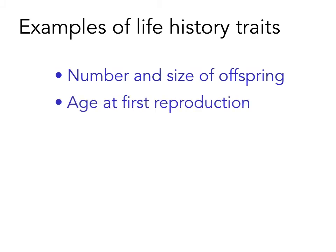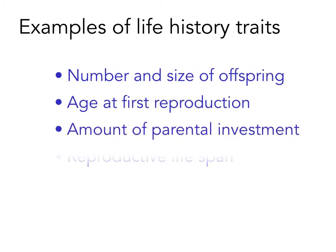So, what is a life history trait? I'll list a few examples here. They all play an essential role in determining the reproductive output of an organism, and therefore its success, as well as that of the population. Things like the number and size of offspring, the age at first reproduction, the amount of parental investment, and the reproductive lifespan — these all vary dramatically among different species and have important effects on the organism's fitness. Yet there are a number of trade-offs that exist regarding how energy is allocated to these different types of traits.